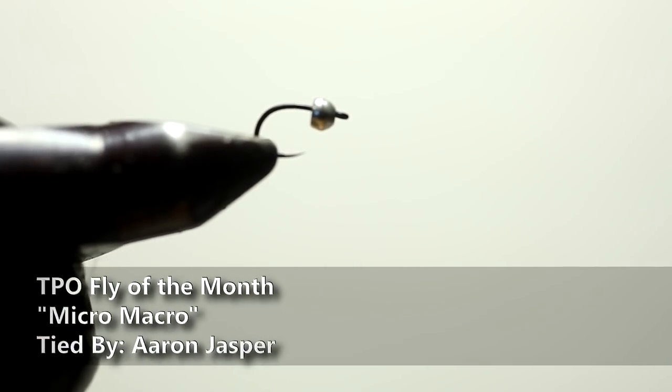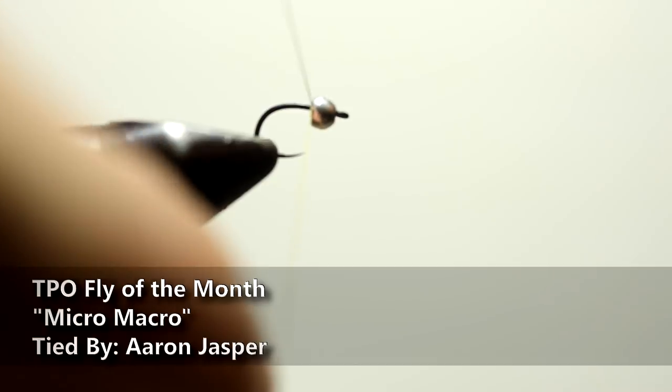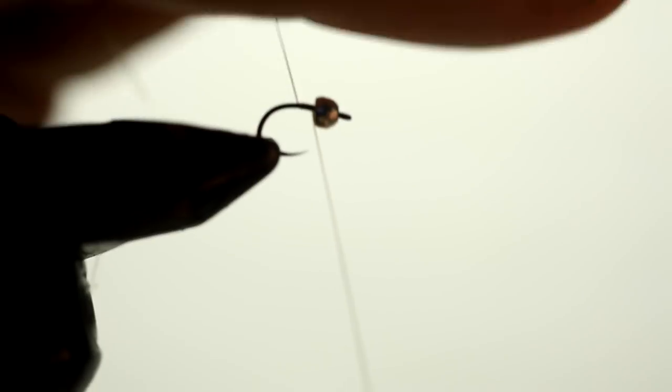Welcome to another TPO fly of the month. This month we're going to do the micro macro. It's a little fly that catches a lot of fish. Here it is. We're going to start with olive UTC 70 thread.